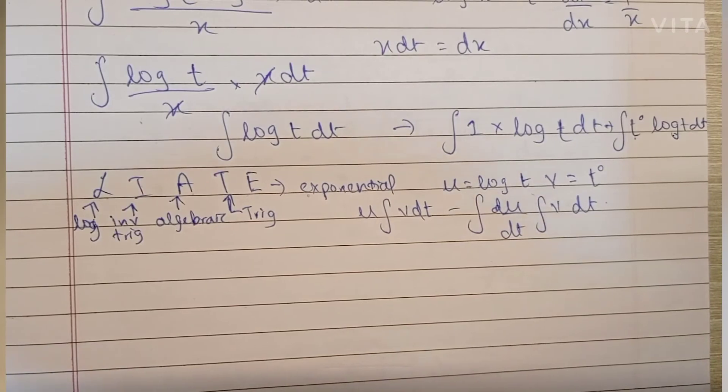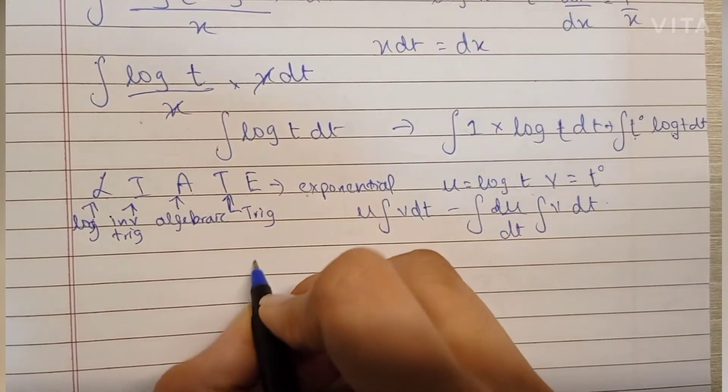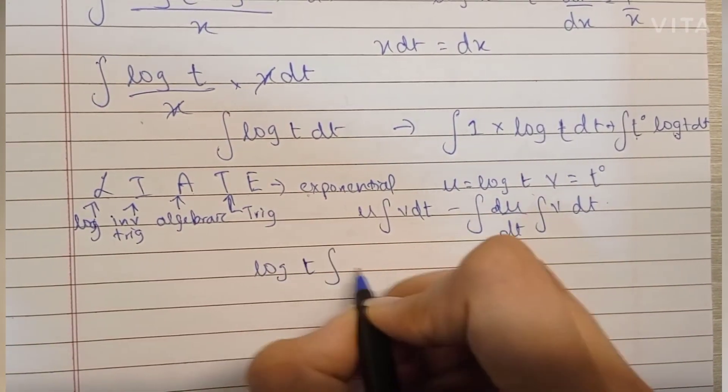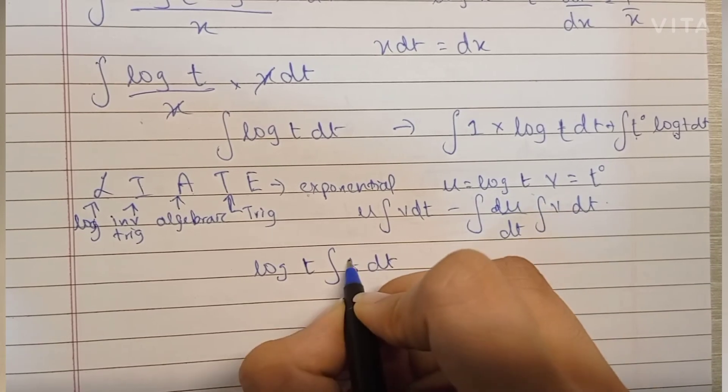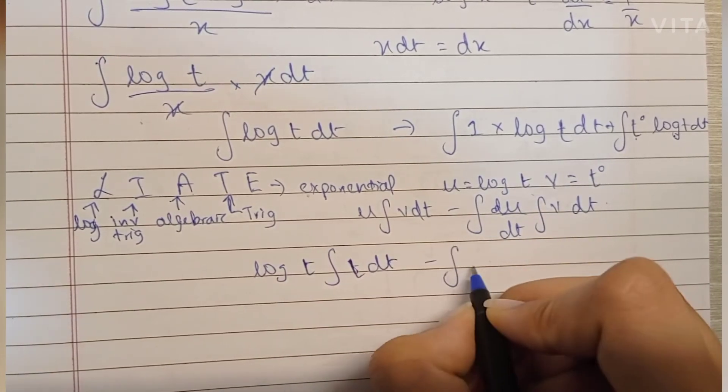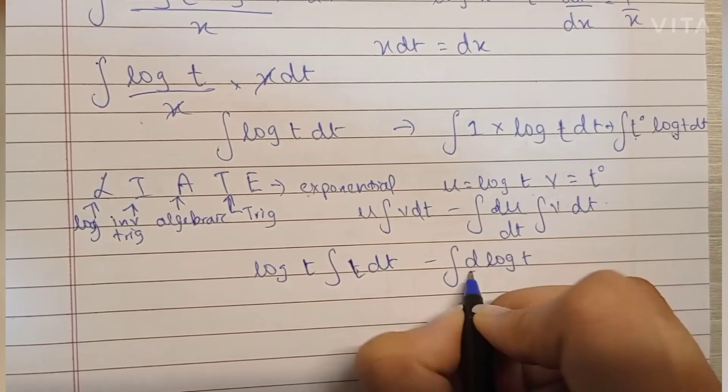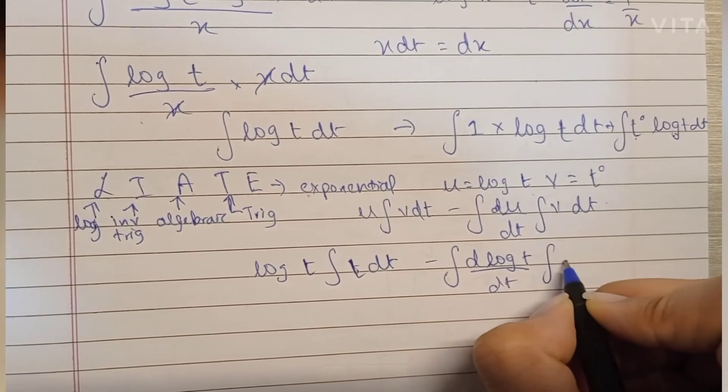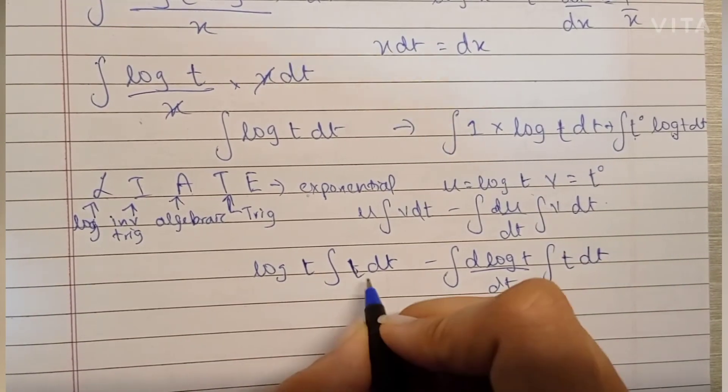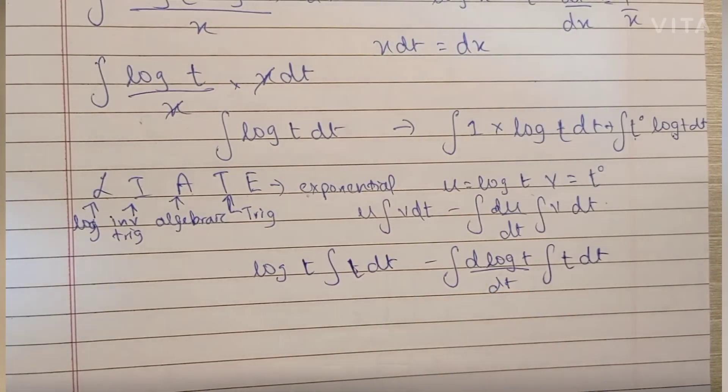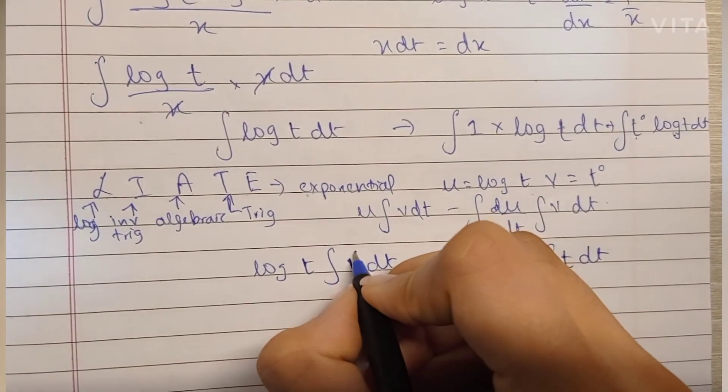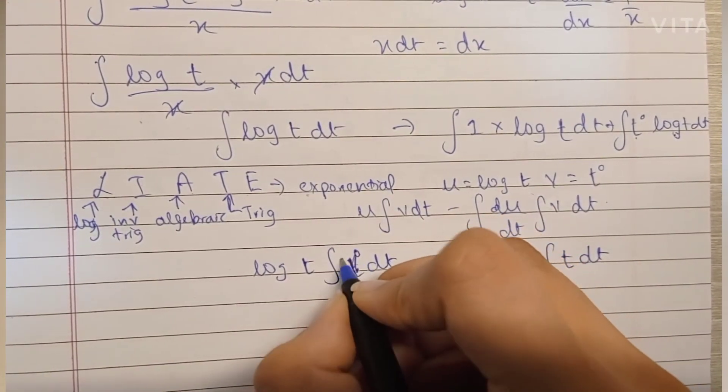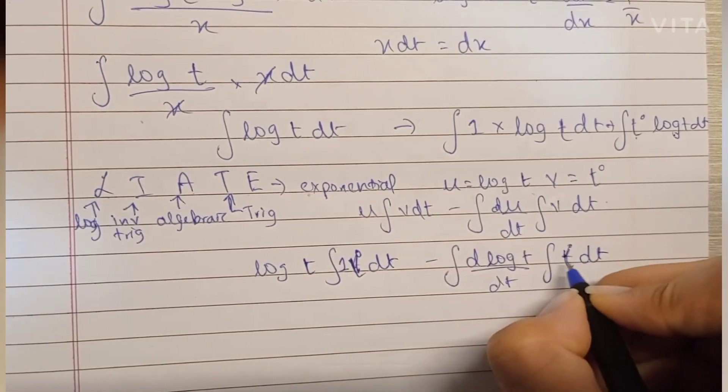Now let's apply this in the formula. We have log t, integration of t dt, minus the integration of differentiation of log t into the integration of t dt. Oh, I'm so sorry, this is t raised to 0, so it's supposed to just be one. The integration of one with respect to t would be t itself.